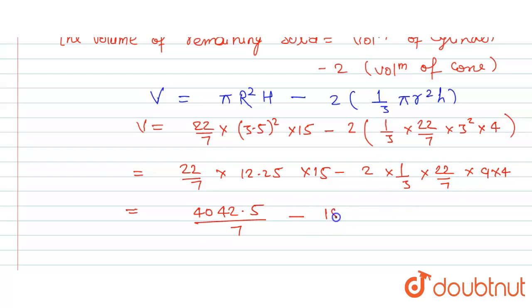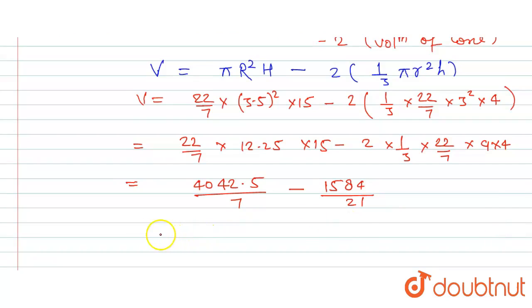so this will be equal to 577.5 minus, when we divide this we will get 75.43, and finally we will get